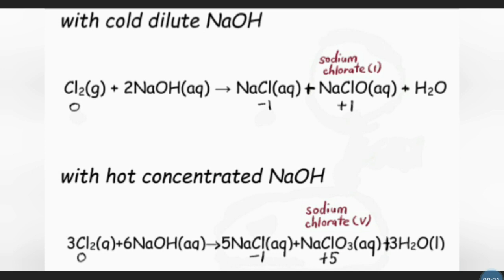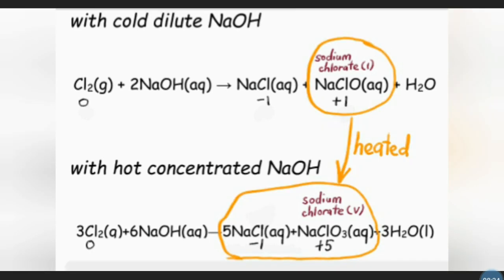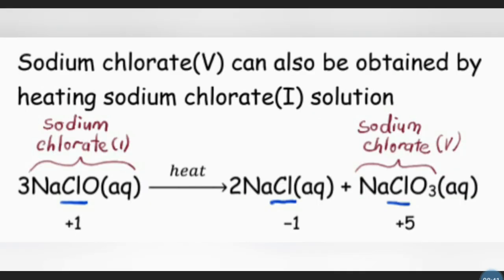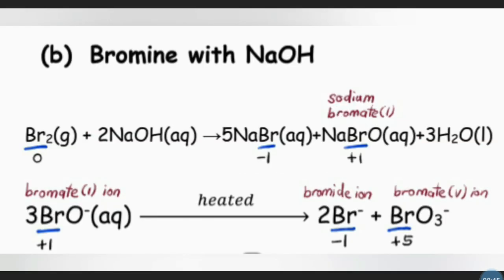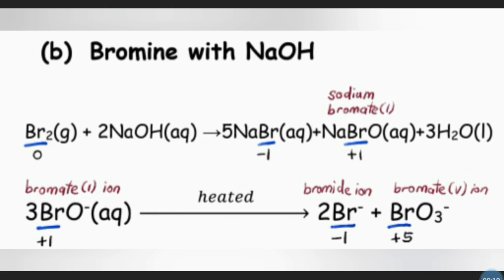Comparing the two equations, the products differ because when sodium hypochlorite (NaClO) is heated, it disproportionates to form sodium chloride and sodium chlorate. For bromine, the reaction with sodium hydroxide is essentially similar to chlorine, except the formation of sodium hypobromite (NaBrO) happens at a much lower temperature of about zero degrees Celsius. When sodium hypobromite is heated to around room temperature, it disproportionates to bromide ion and bromate (BrO₃⁻) ion.